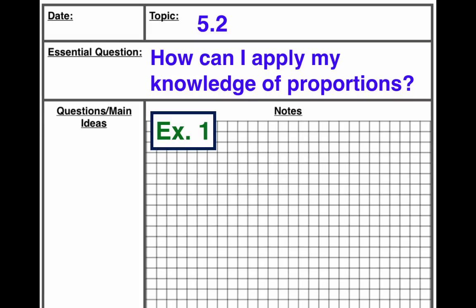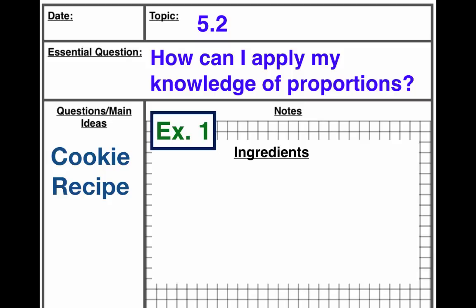For your notes, on the left side we're going to talk about the main idea — today is a cookie recipe. For Example One, we're going to make an ingredients list. One of the first things you see in a recipe is what are the ingredients — what goes into the cookies, what do you need to buy at the store to make them?